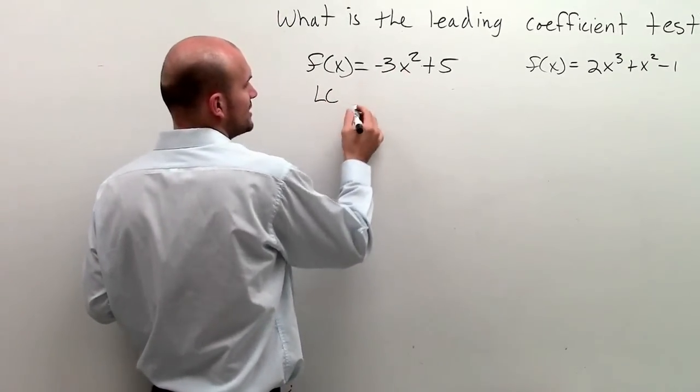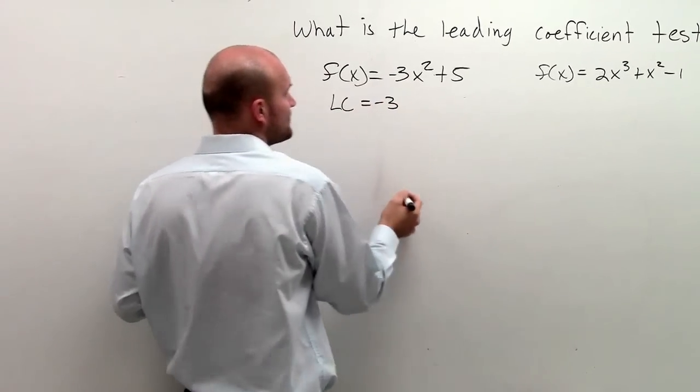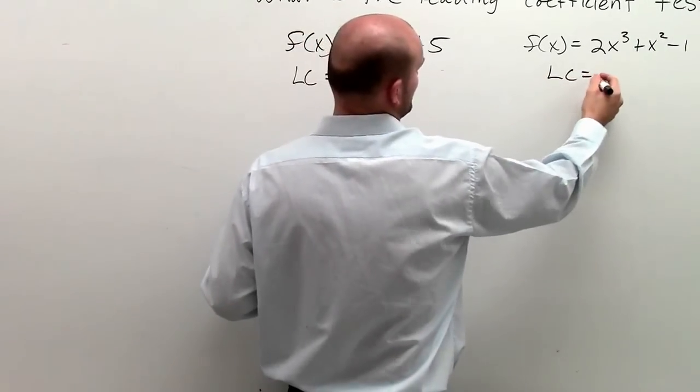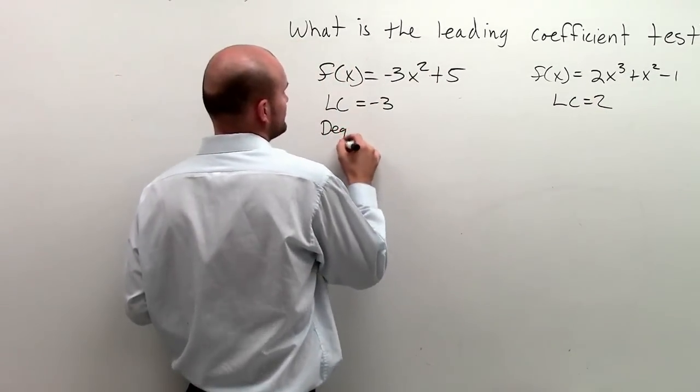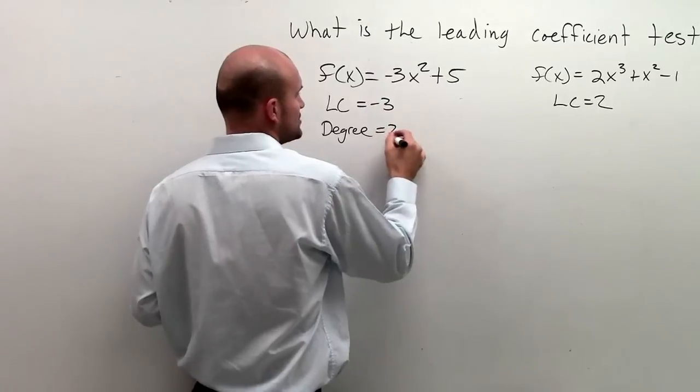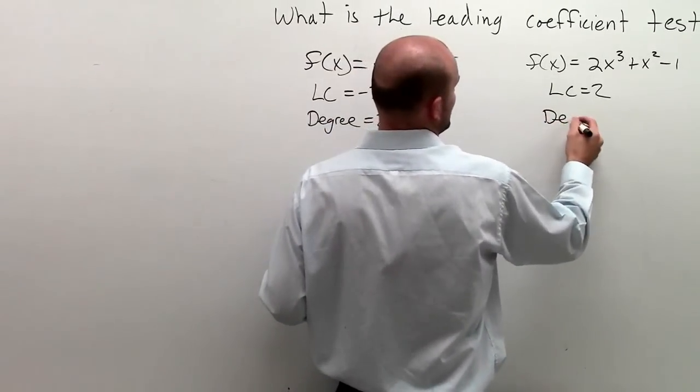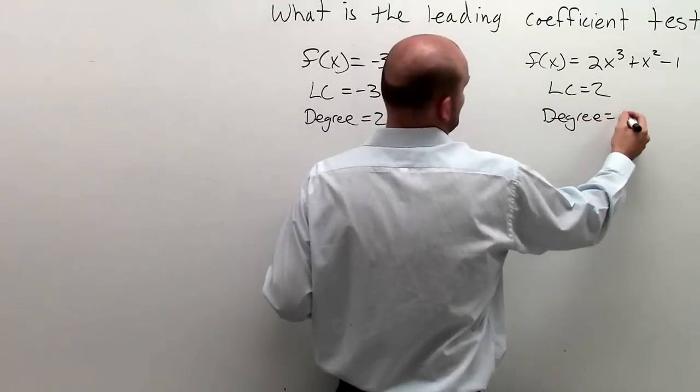So here, the leading coefficient, LC, is equal to negative 3. Here, the LC is equal to 2. Here, my degree is equal to 2. And here, my degree is equal to 3.